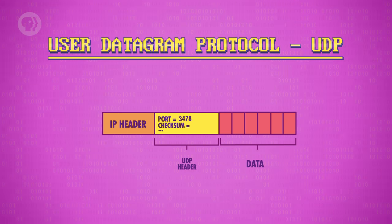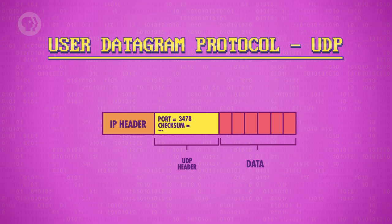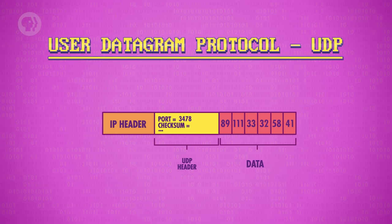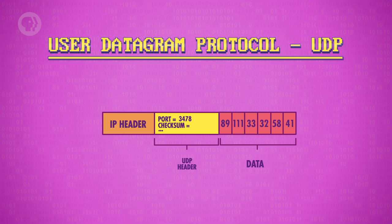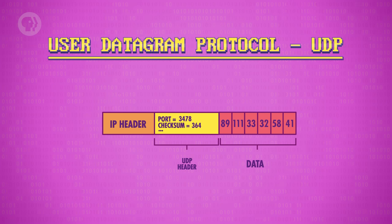UDP headers also include something called a checksum, which allows the data to be verified for correctness. It does this by checking the sum of the data. Here's a simplified version: let's imagine the raw data in our UDP packet is 89, 111, 33, 32, 58, and 41. Before the packet is sent, the transmitting computer calculates the checksum by adding all the data together — 89 plus 111 plus 33, and so on — adding up to a checksum of 364. In UDP, the checksum value is stored in 16 bits. If the sum exceeds the maximum possible value, the uppermost bits overflow and only the lower bits are used.